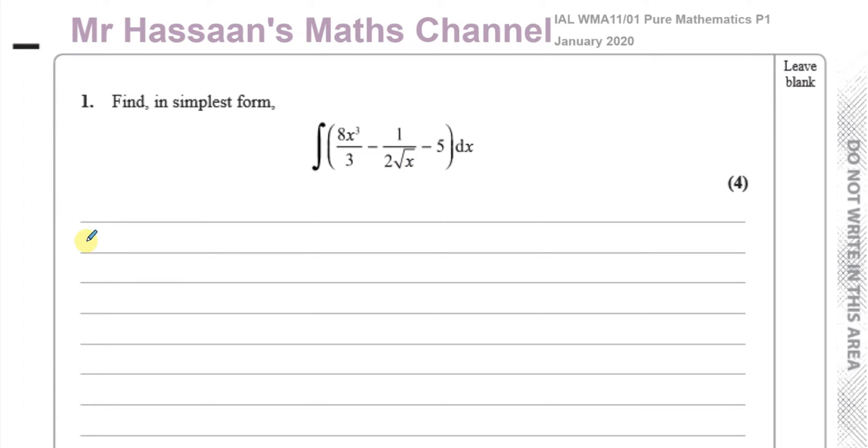A question like this, very common type of question, before we can get into actually integrating, we have to prepare each term to be integrated. The first term is fine, it's already prepared for integration. The power has to be the x term, the term that needs to be integrated must be on the numerator. And there should not be any square roots, cube roots, anything. It should be written in index form.